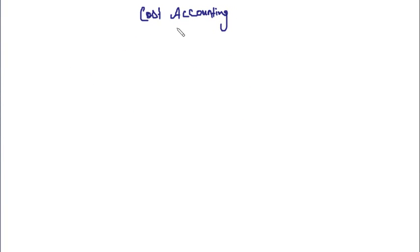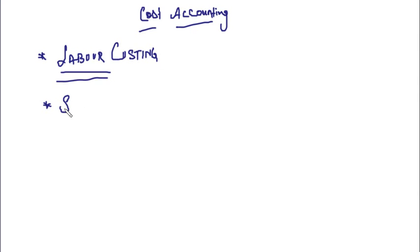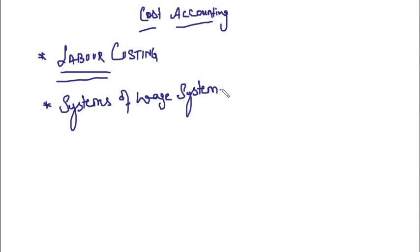Hello friends, let us continue from where we left in the last lecture about labor costing. We started with the systems of wage payment. There has to be some system on the basis of which we calculate the wages or salaries payable to labor. Under the systems of wage payment, there are various systems: time-based system, output-based system, combination of time and output-based system, premium bonus plans, and group incentive plans — six systems in total.